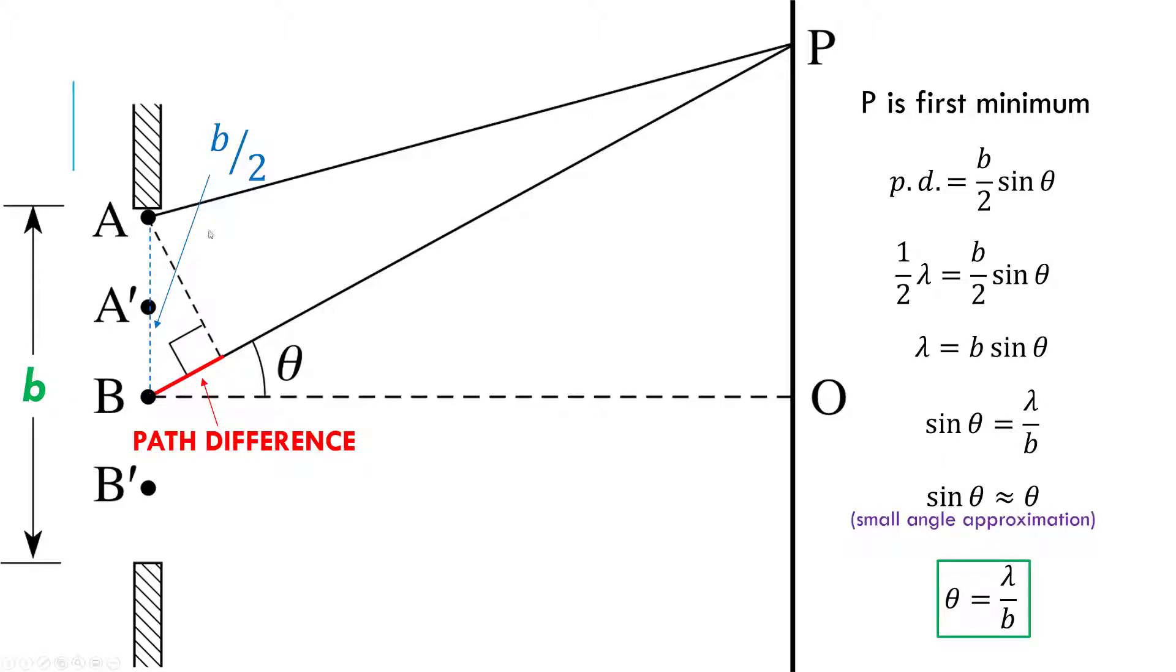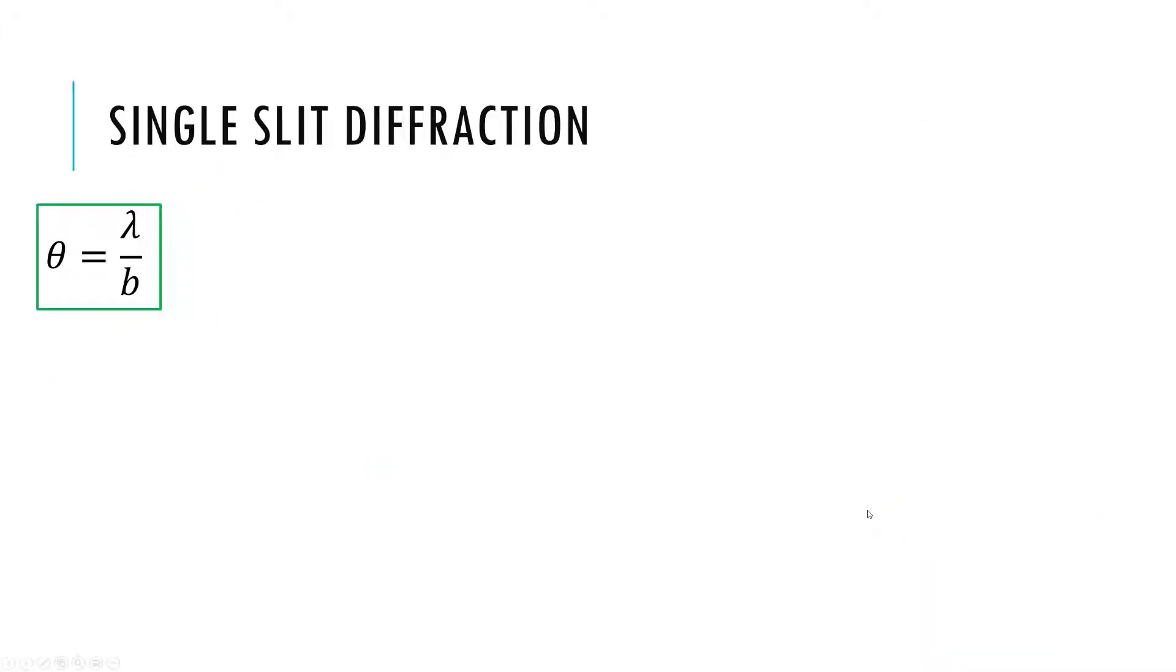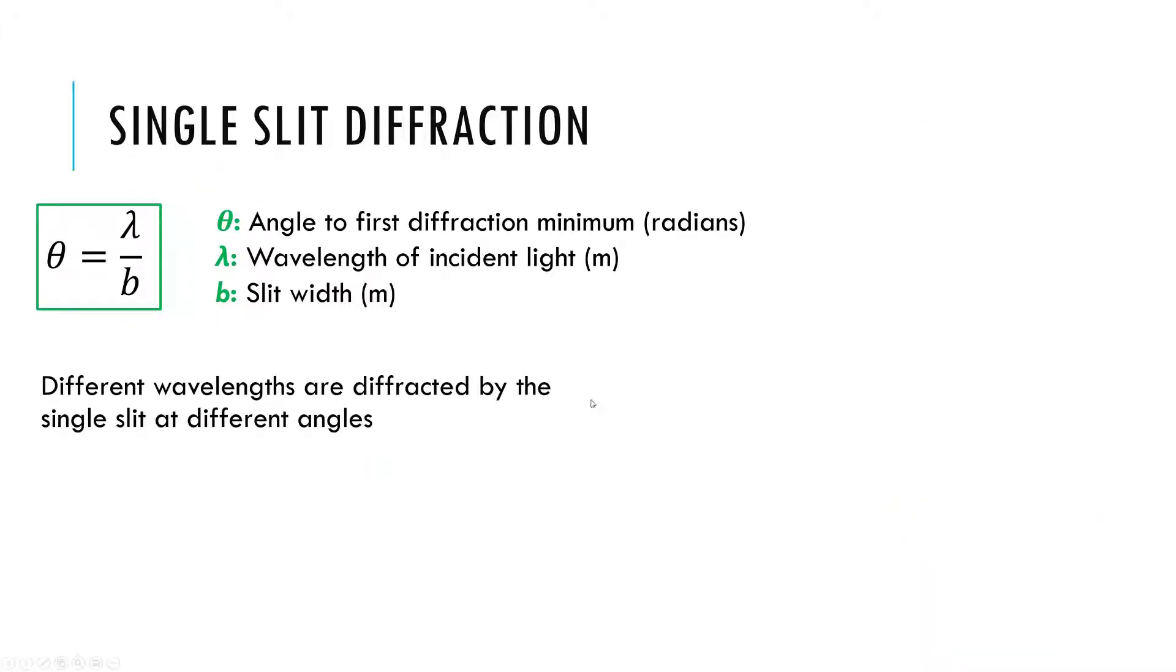So all that being said, this single-slit equation is this angle equals wavelength over b. This just shows up in the data booklet under single-slit diffraction, so you need to bring some knowledge, like with the whole data booklet, which is mainly what these variables are.